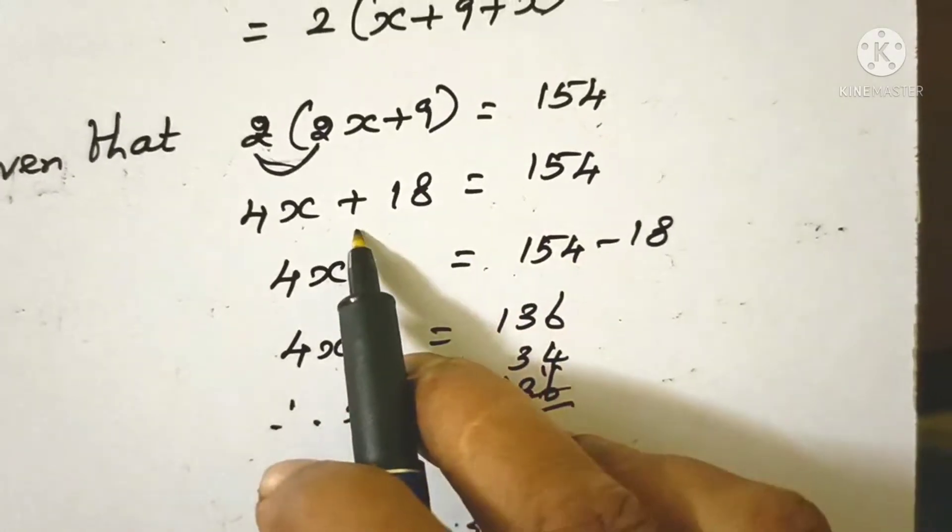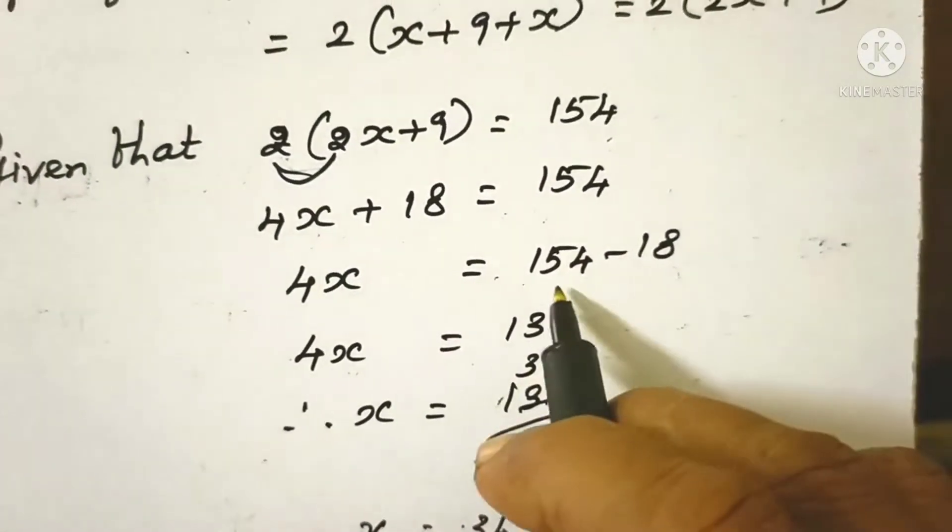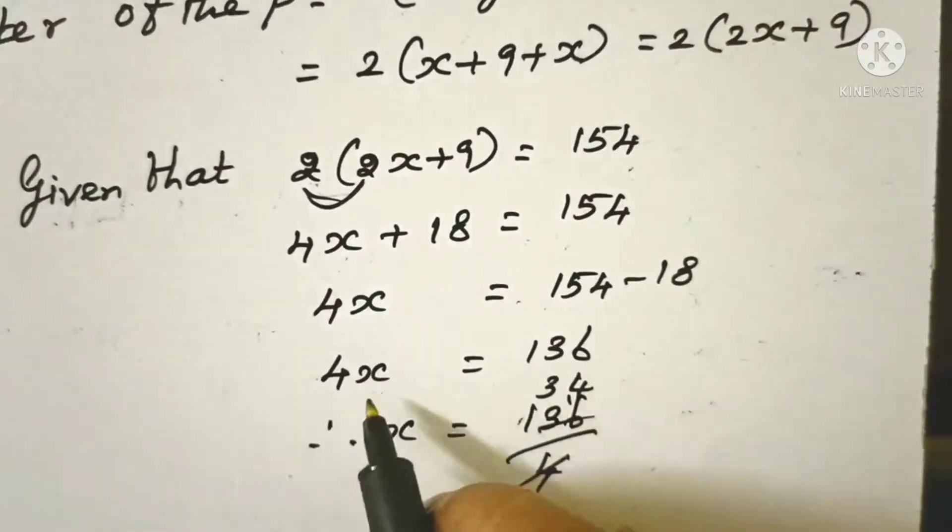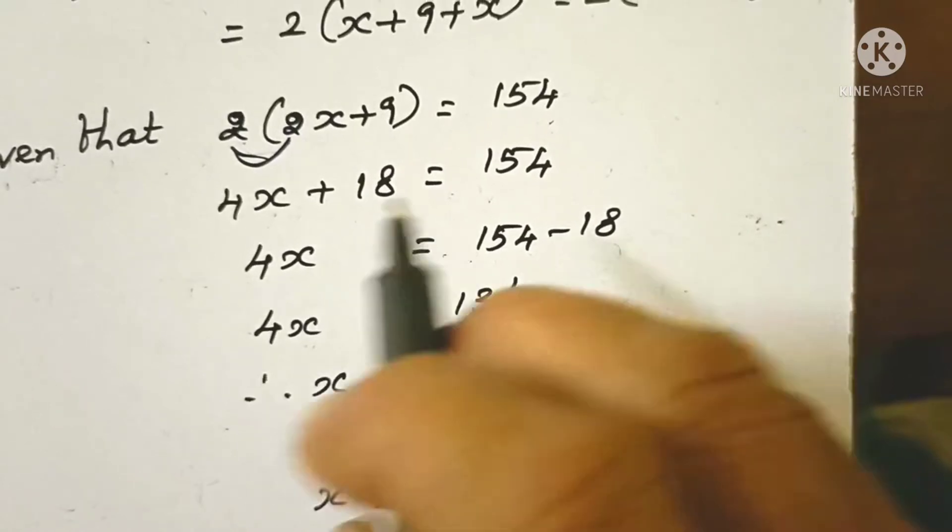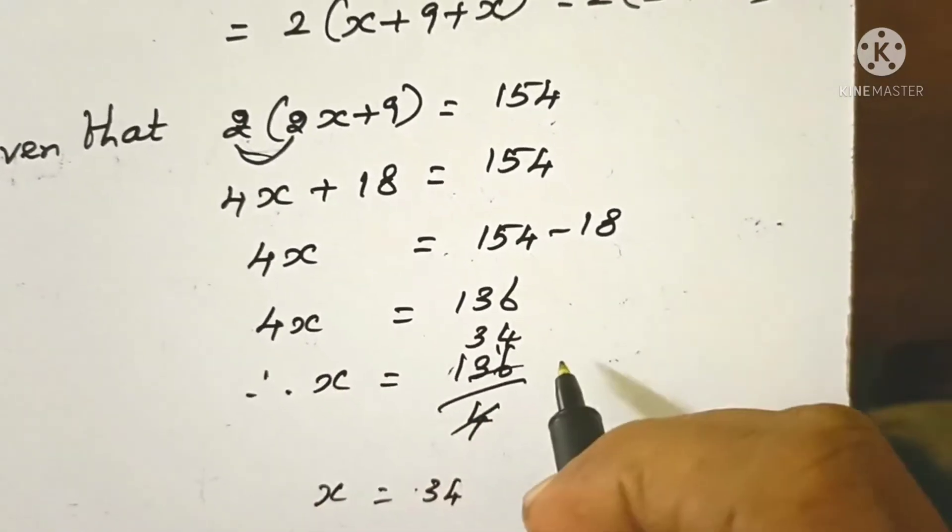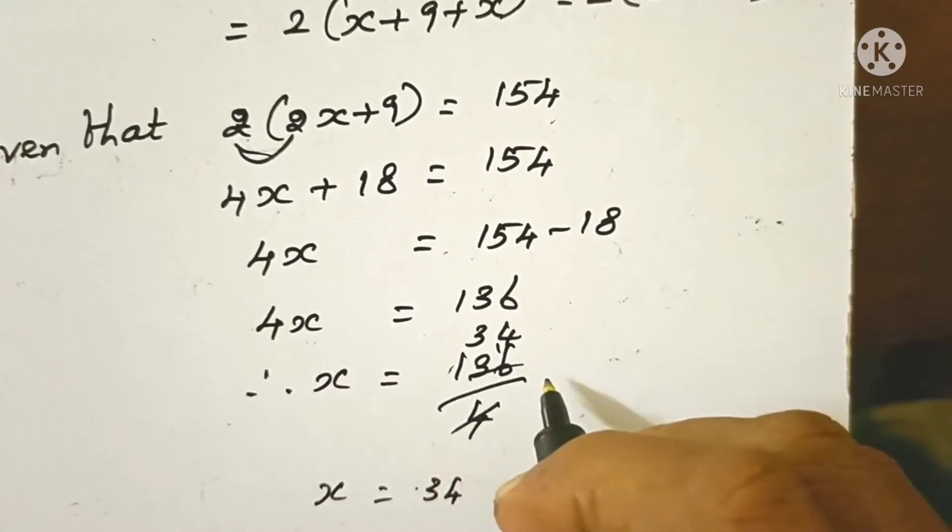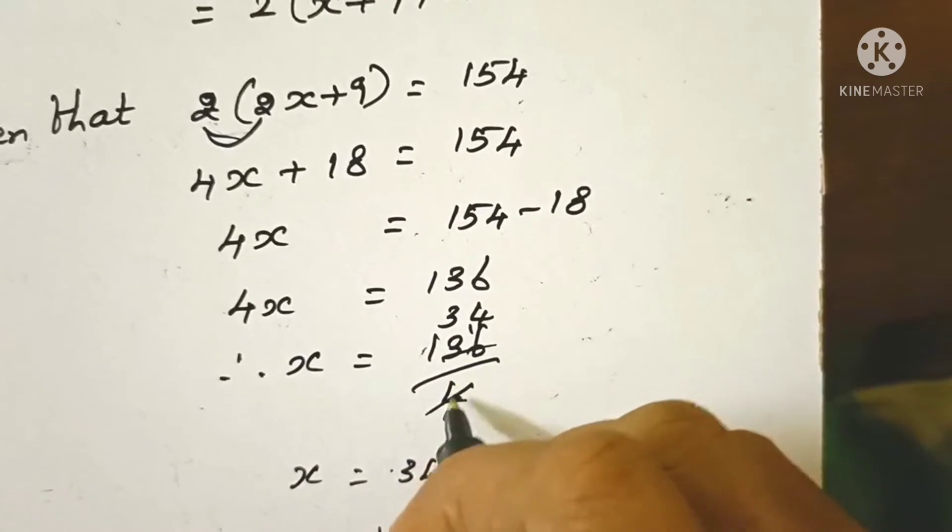4x + 18 = 154. Subtracting 18 from both sides: 4x = 154 - 18 = 136. To isolate x, divide 4 to the other side.